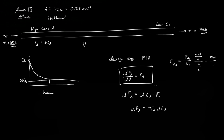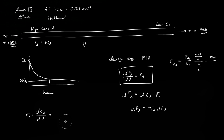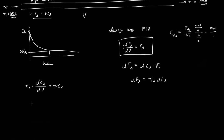We plug this back into the design equation to get V₀·dCA/dV = RA. For a first-order reaction, RA = −k·CA, so V₀·dCA/dV = −k·CA. Rearranging by multiplying both sides by dV and dividing by −k·CA gives: (−V₀/k)·(dCA/CA) = dV.